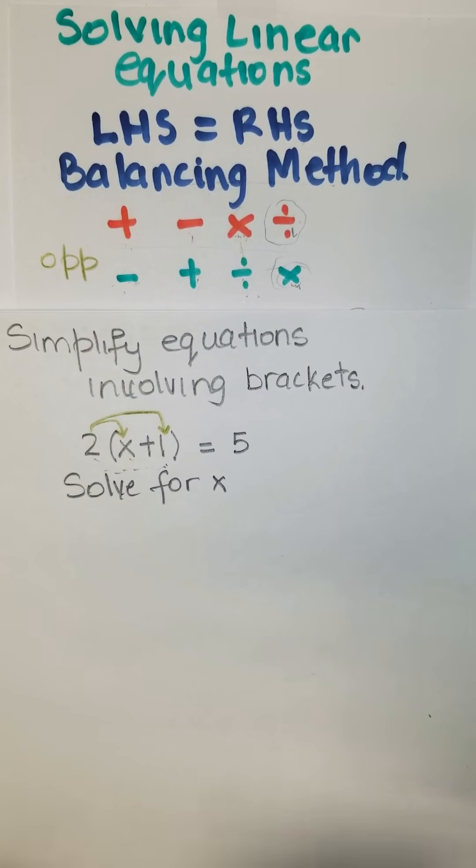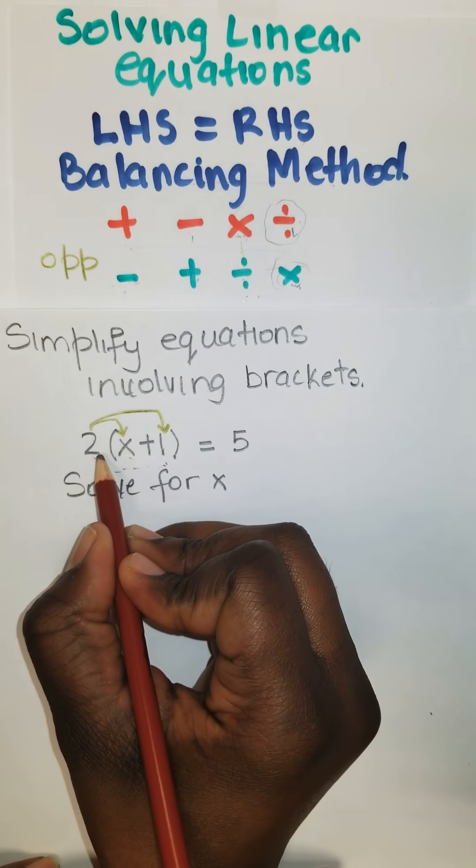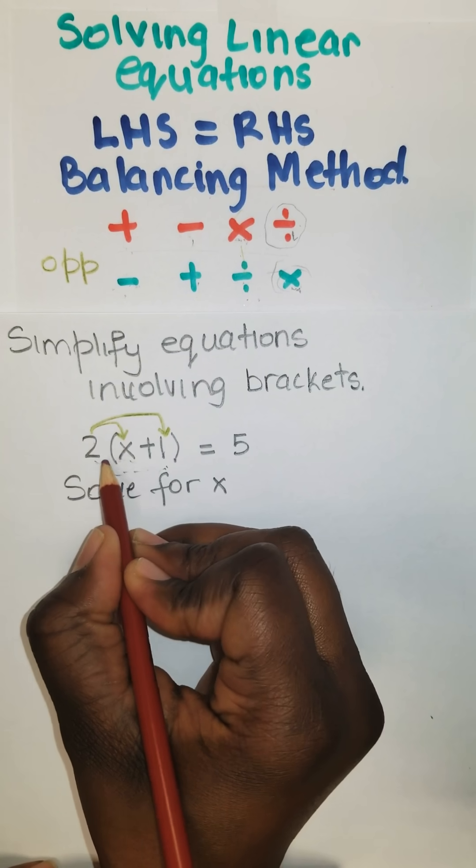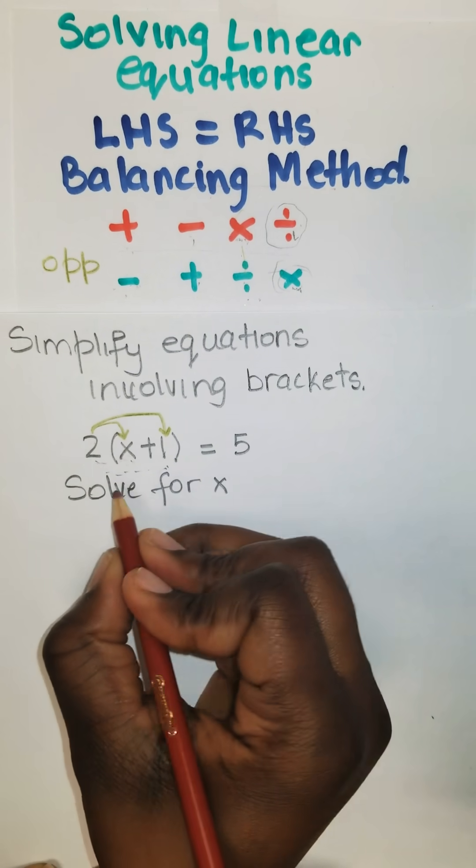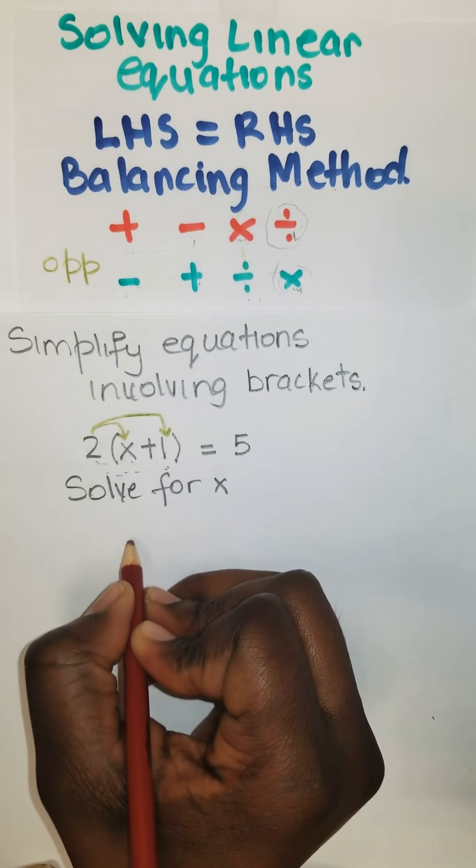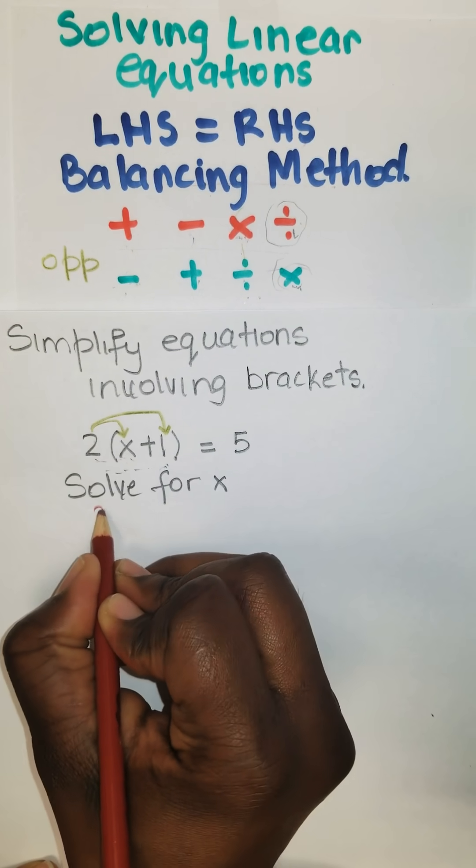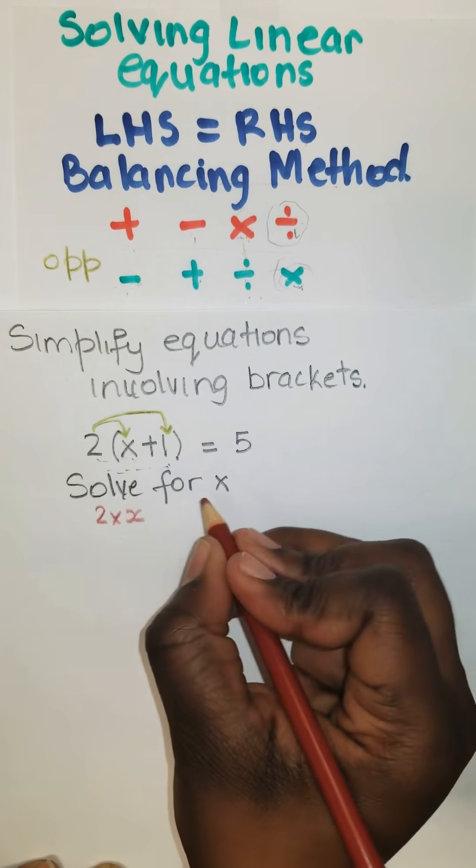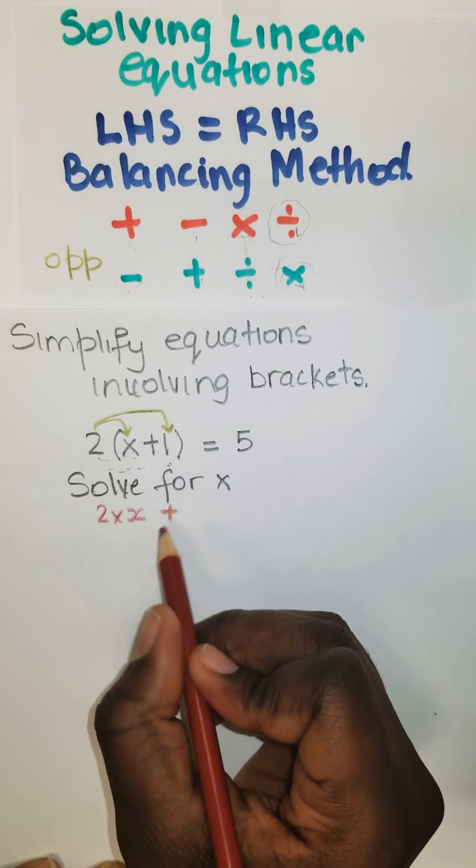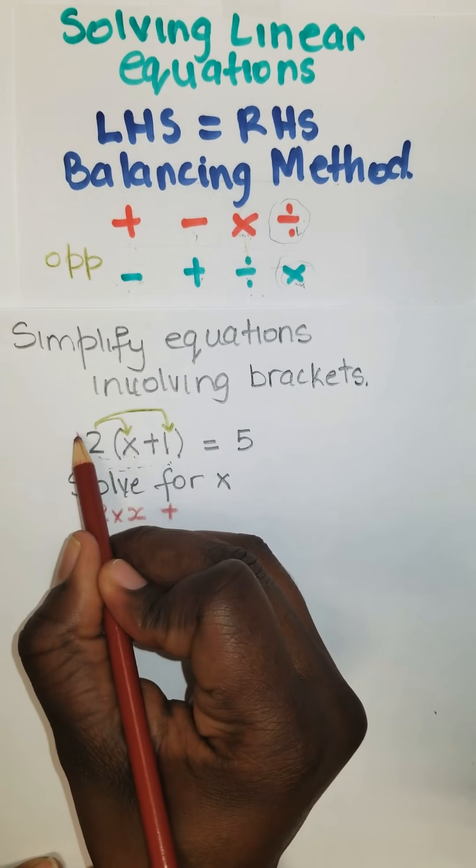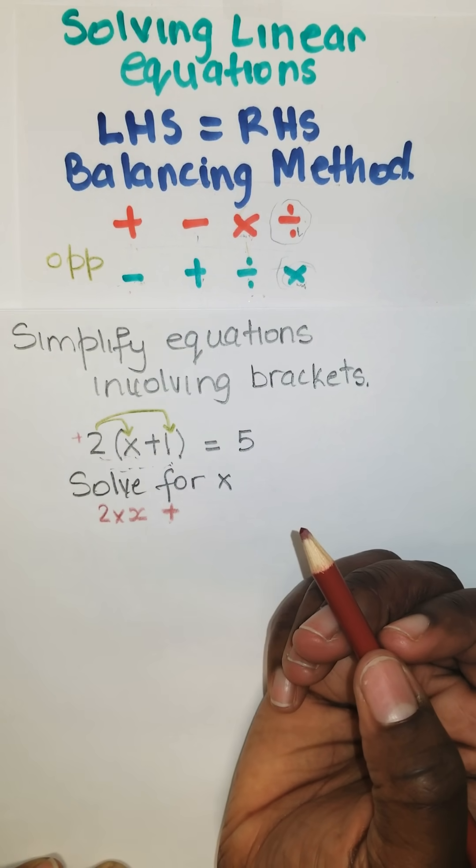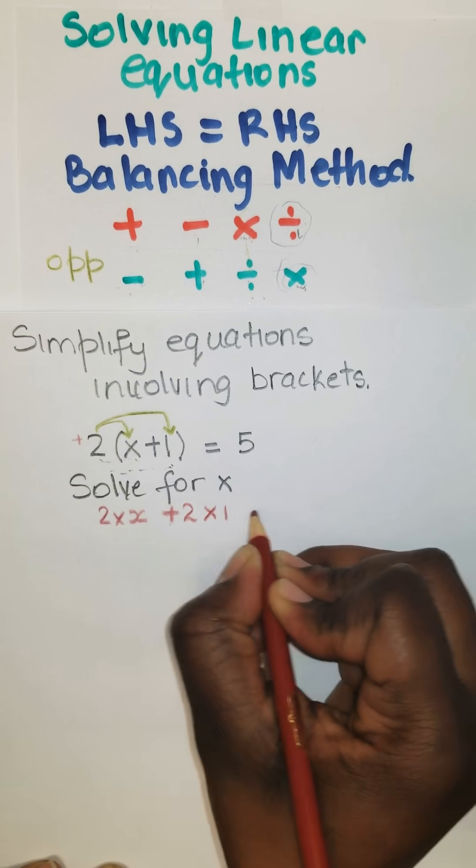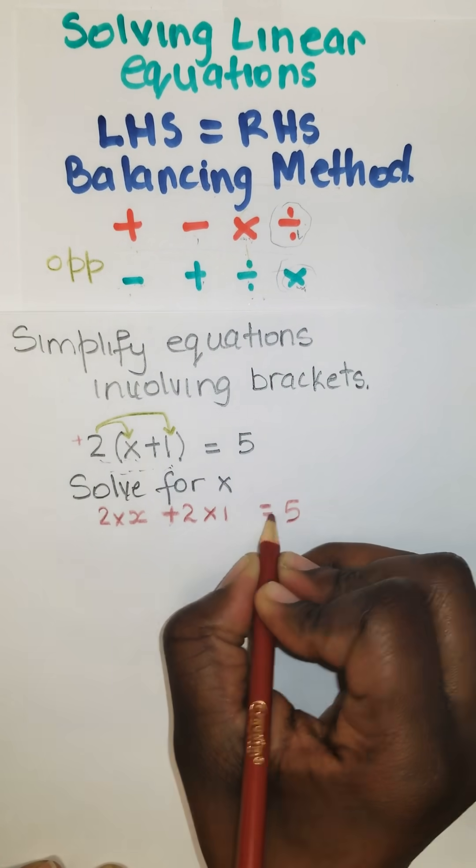Once you have a number outside a bracket, it's basically multiplying by whatever is inside of the bracket. So I'm going to do it step by step. It's 2 times x plus, why do you have a plus? Because this two is a positive two. Plus 2 times 1 is equal to 5.